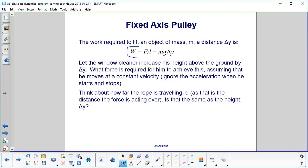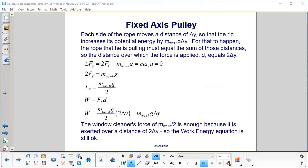The work required to lift an object of mass m a distance delta y is f dot d, which turns out to be mg delta y because the force is acting in the same direction as the displacement. We're going to have the window cleaner increase his height above the ground by delta y. What force is required for him to achieve this? Assuming that he moves at a constant velocity, we're going to ignore the acceleration when he starts and stops. Here's the key point: Think about how far the rope is traveling, not how far the harness and the window cleaner is traveling, but the rope, because that's the distance d that the force is acting over. Is that the same as the height delta y?